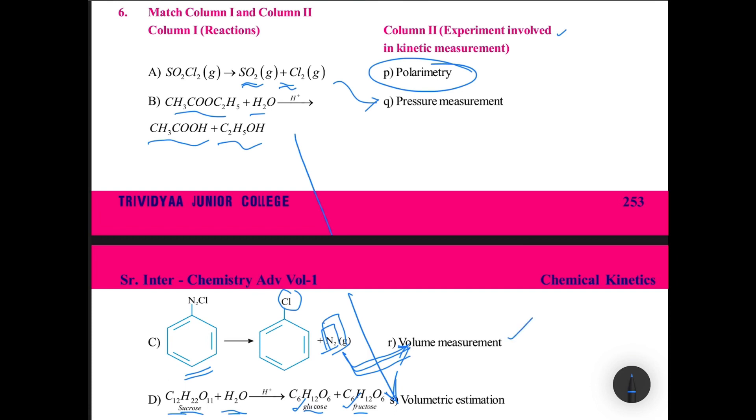So for D option polarimetric, for C option volume measurement, for B option volumetric estimation, and A option pressure measurement. Thank you.